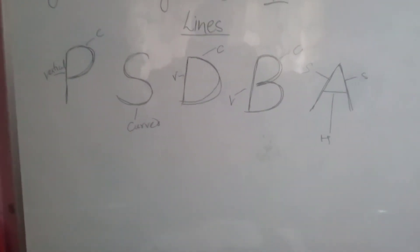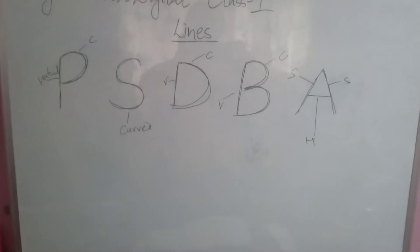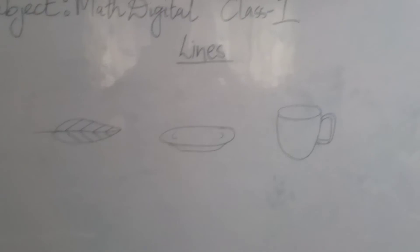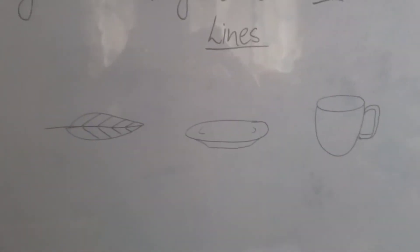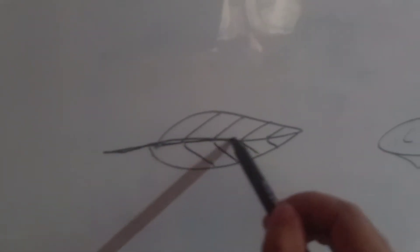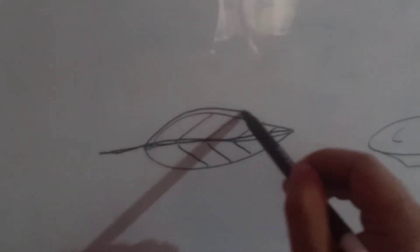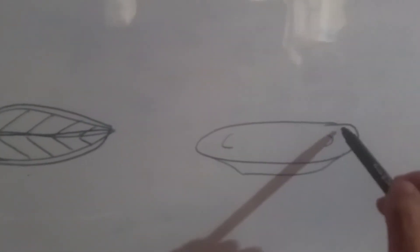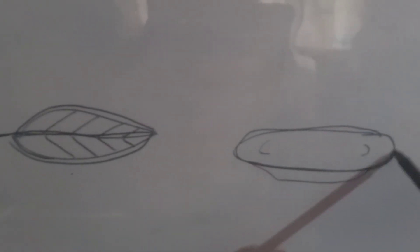Let me give you one more example. Here we have a leaf, a plate, and a mug. In the leaf, there is a horizontal line as well as a curve shape. So both horizontal and curved lines are present in the shape of a leaf.